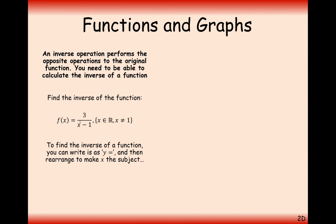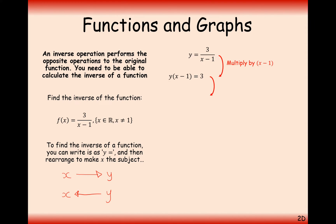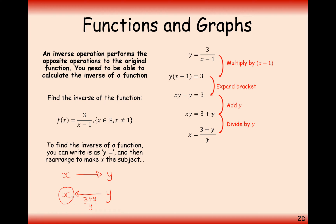What we want is how to get from y-coordinates back to x-coordinates, which can be done just by rearranging. Multiply by x minus 1, expand your brackets, and now we've got x equals 3 plus y over y. This function is the inverse — it's what you substitute your output numbers into to get back to your input number. Generally we write the final answer with x's rather than y's, so f inverse of x equals 3 plus x over x.